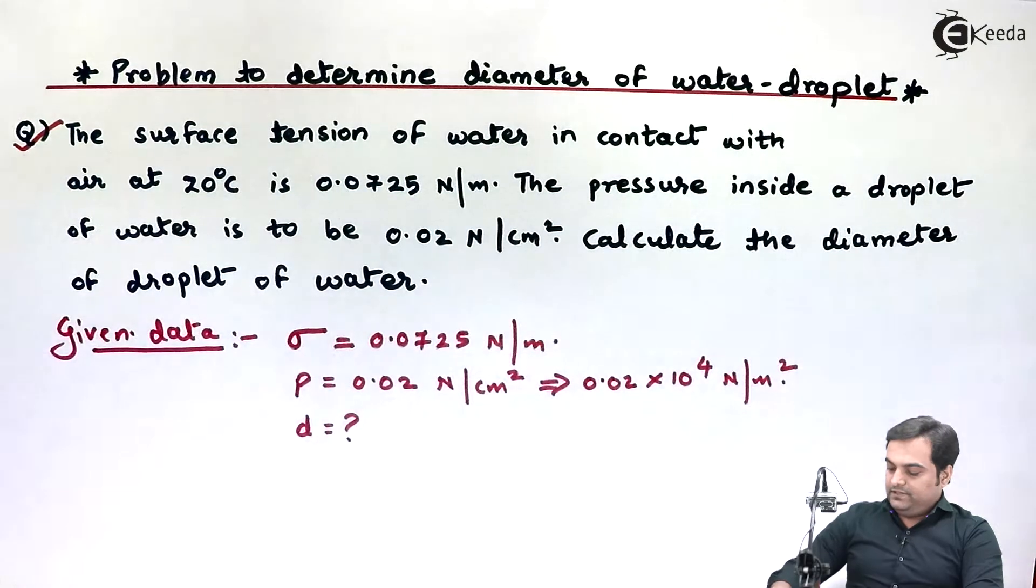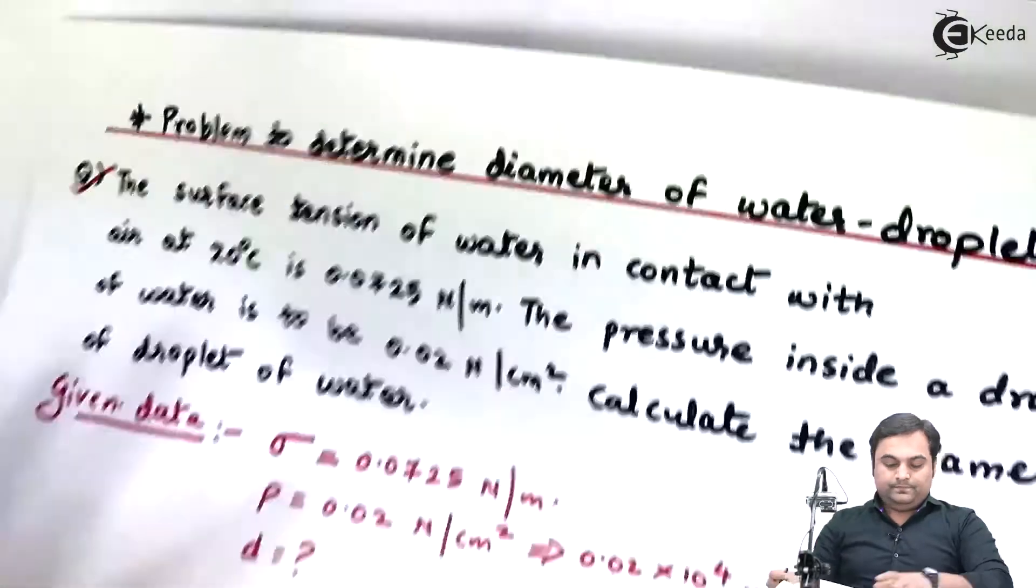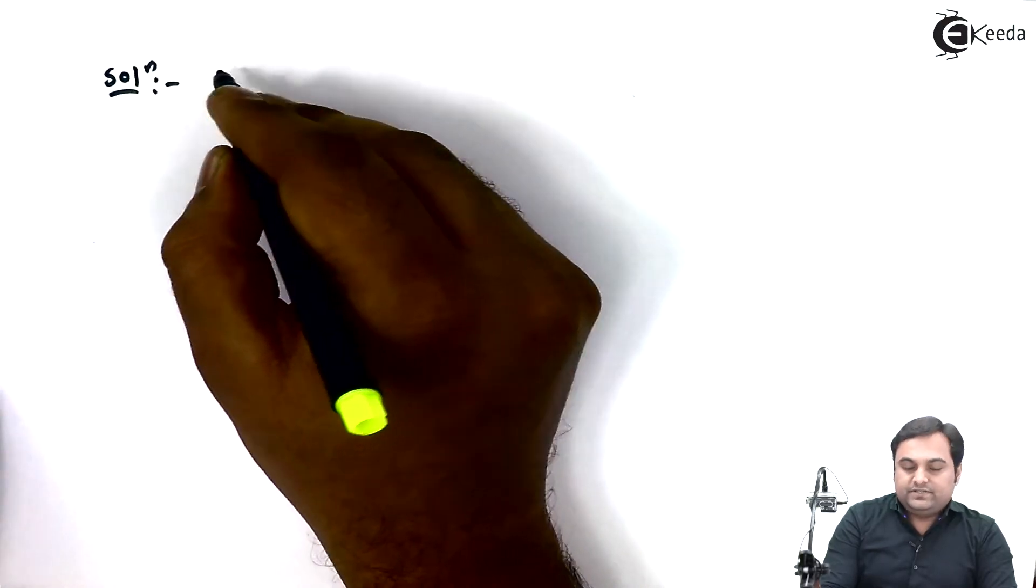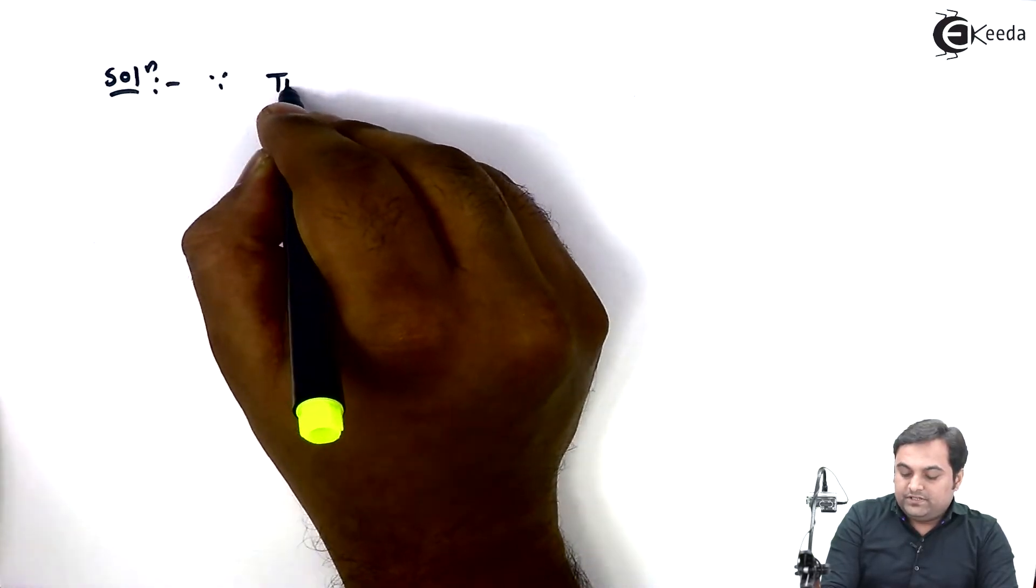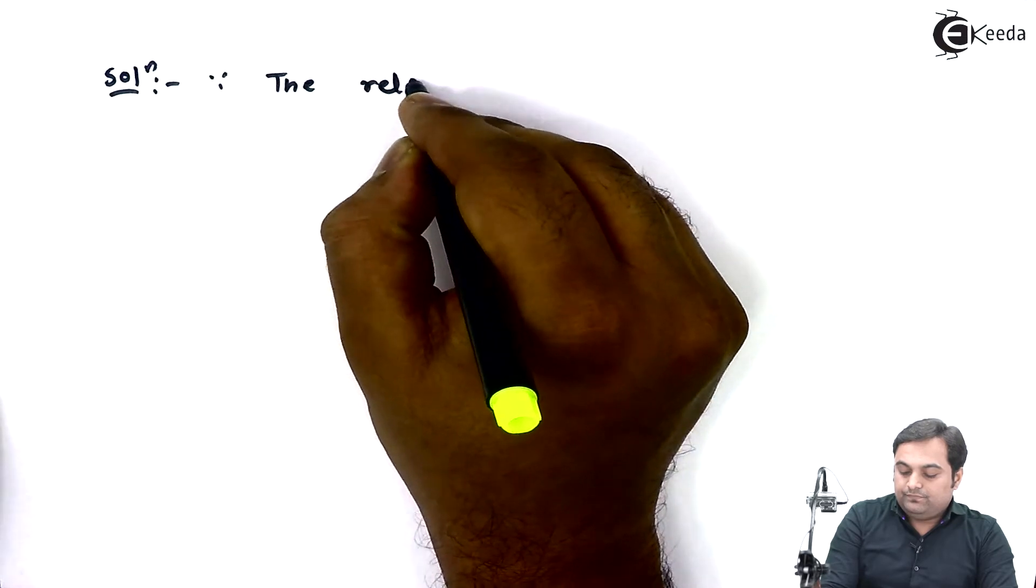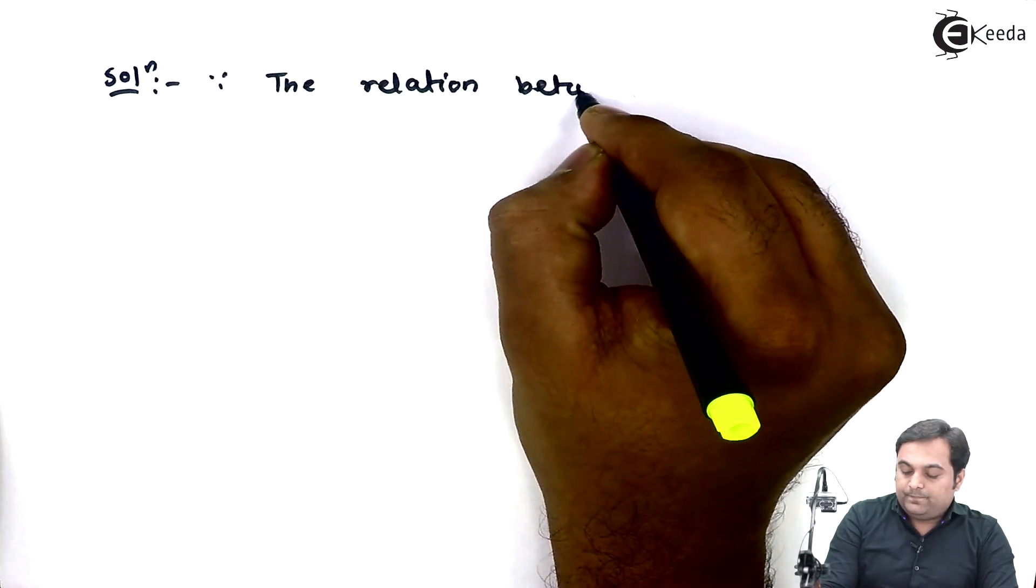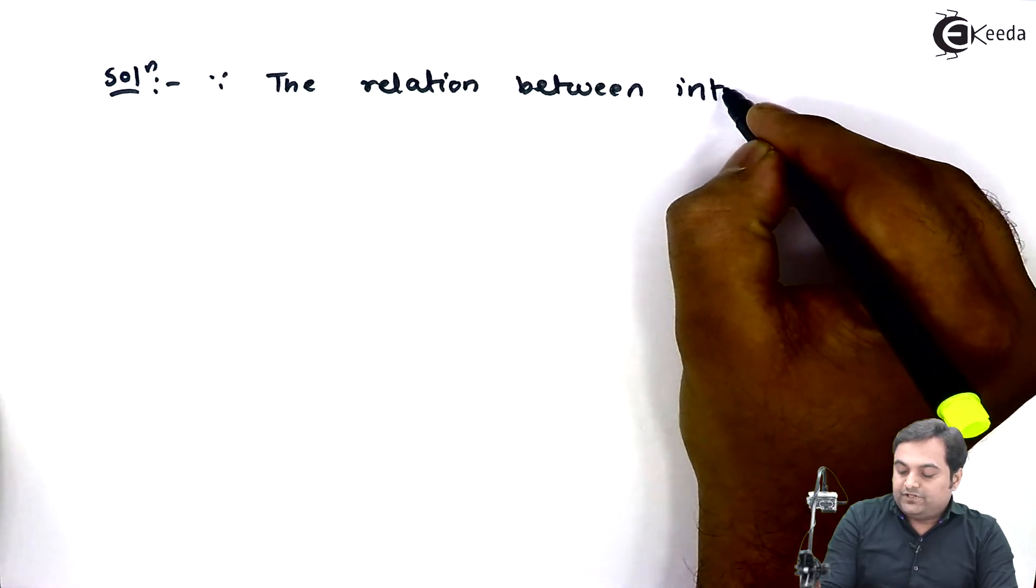In solution, we can say that since the relation between intensity of pressure and surface tension is as follows: